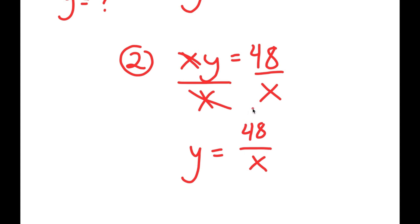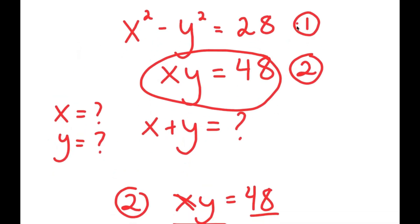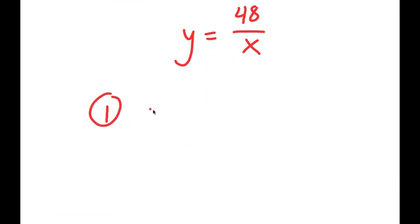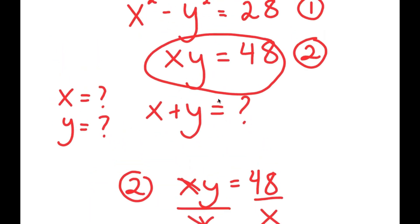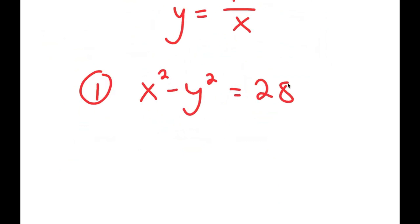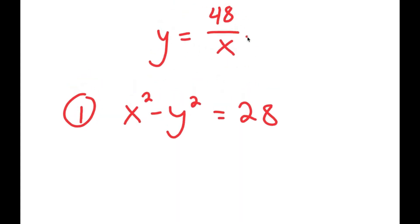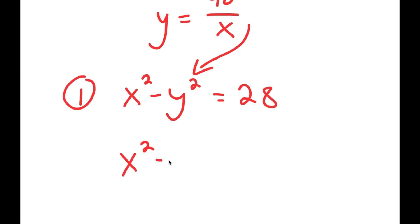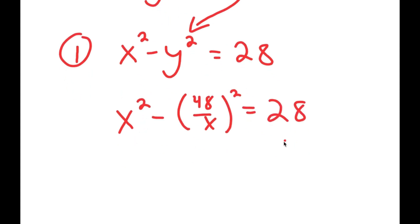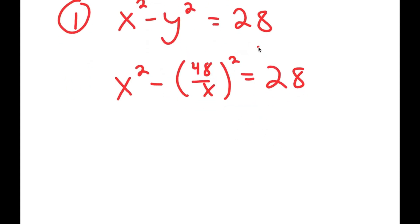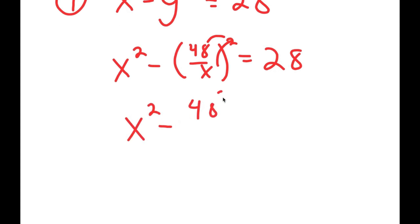Using this equation, I can plug it back into equation one: x squared minus y squared is equal to 28. Since y equals 48 over x, substituting gives x squared minus 48 over x, all squared, is equal to 28. That becomes x squared minus 48 squared over x squared is equal to 28.